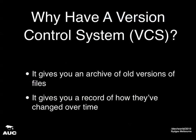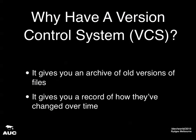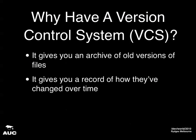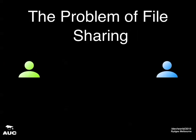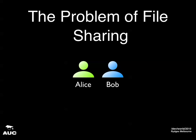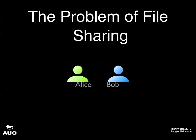That's what a version control system gives you, but there's one other important thing it gives you: it helps you collaborate with other people. The chief problem when working with other people that a version control system tries to help with is problems to do with file sharing. We'll introduce two developers here, Alice and Bob, and they're going to try and work on some shared code together.